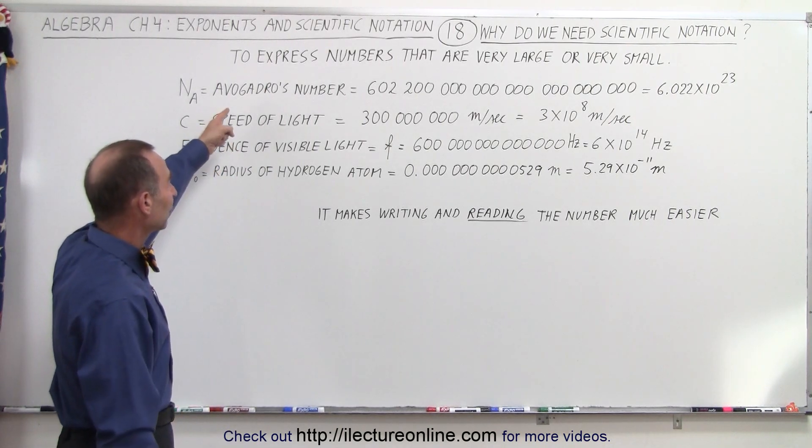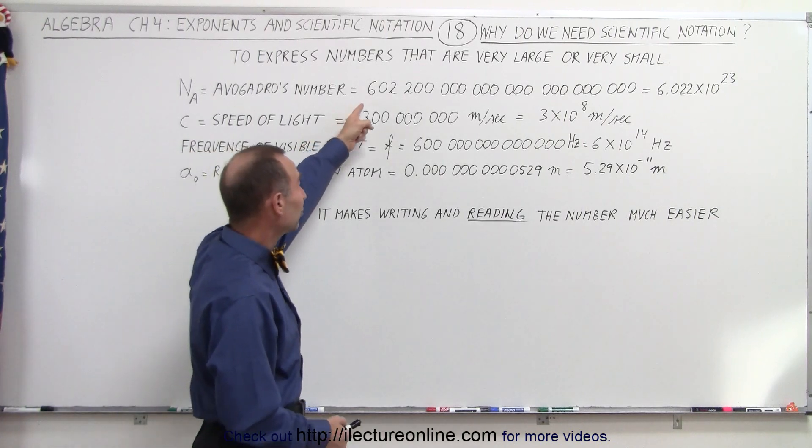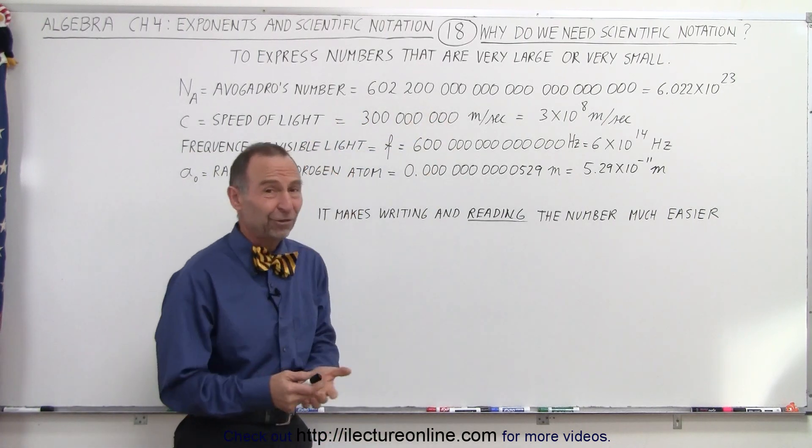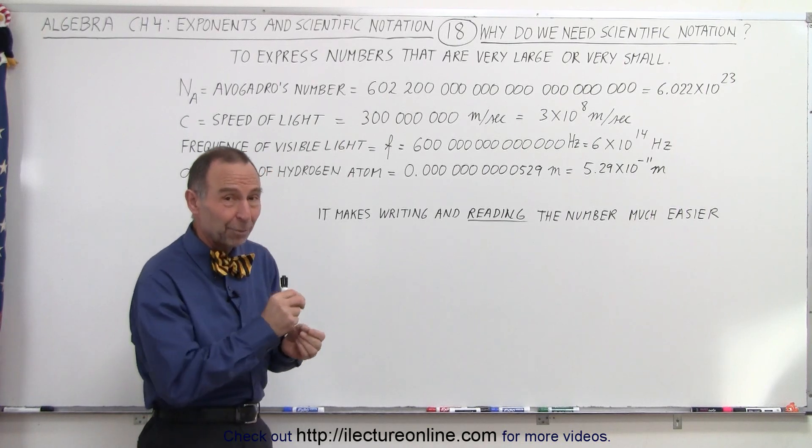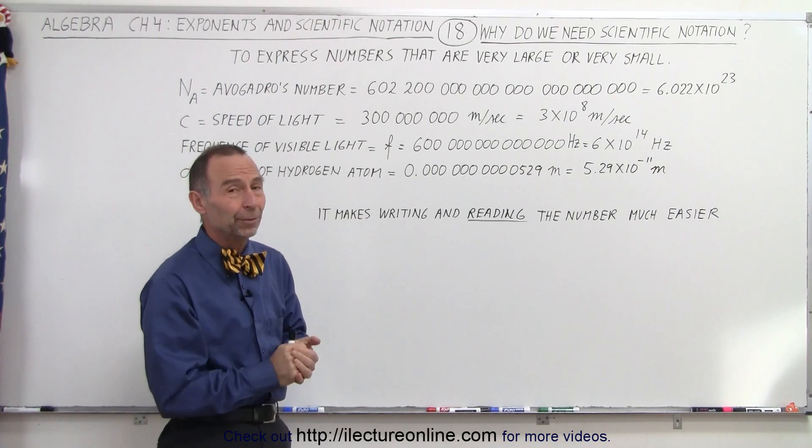For example, Avogadro's number. If you were to try to write it out in decimal format, first of all, you have to really keep count of the number of zeros you put down, and then it would make it very difficult to read the number.